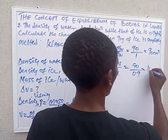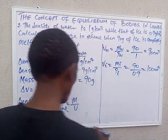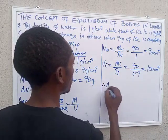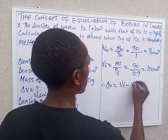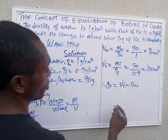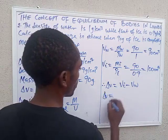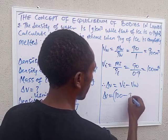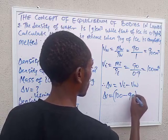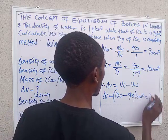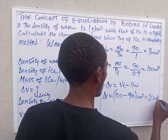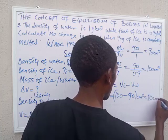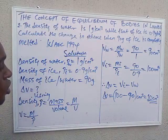Therefore, the change in volume equals volume of ice minus volume of water. That is 100 minus 90, all in centimeters cube, which gives us 10 centimeters cube. This is the solution to the question.